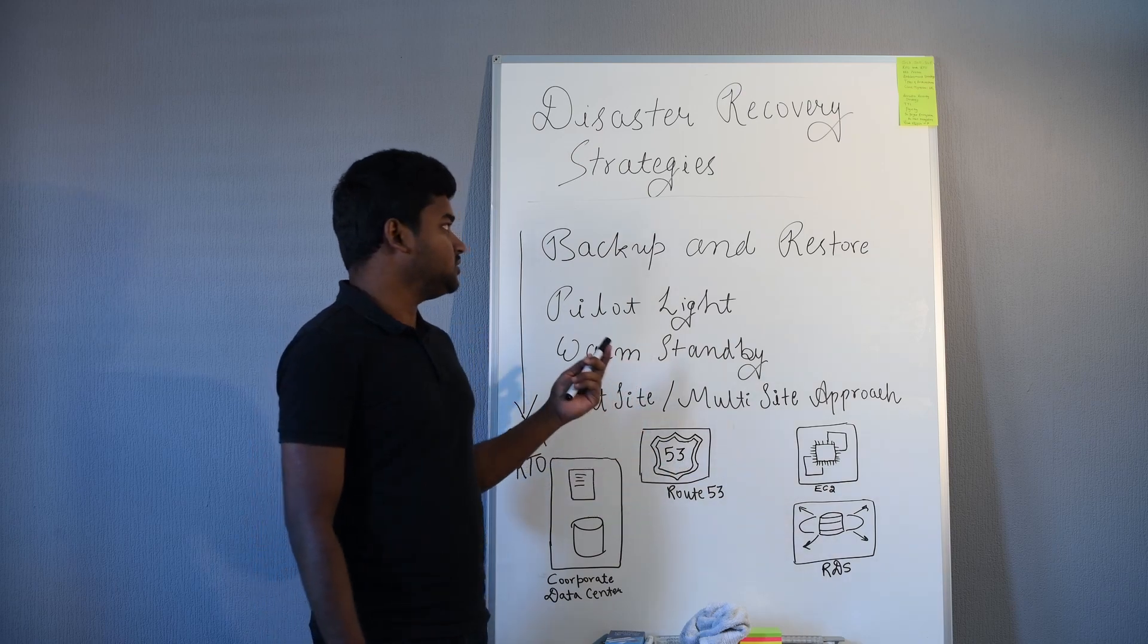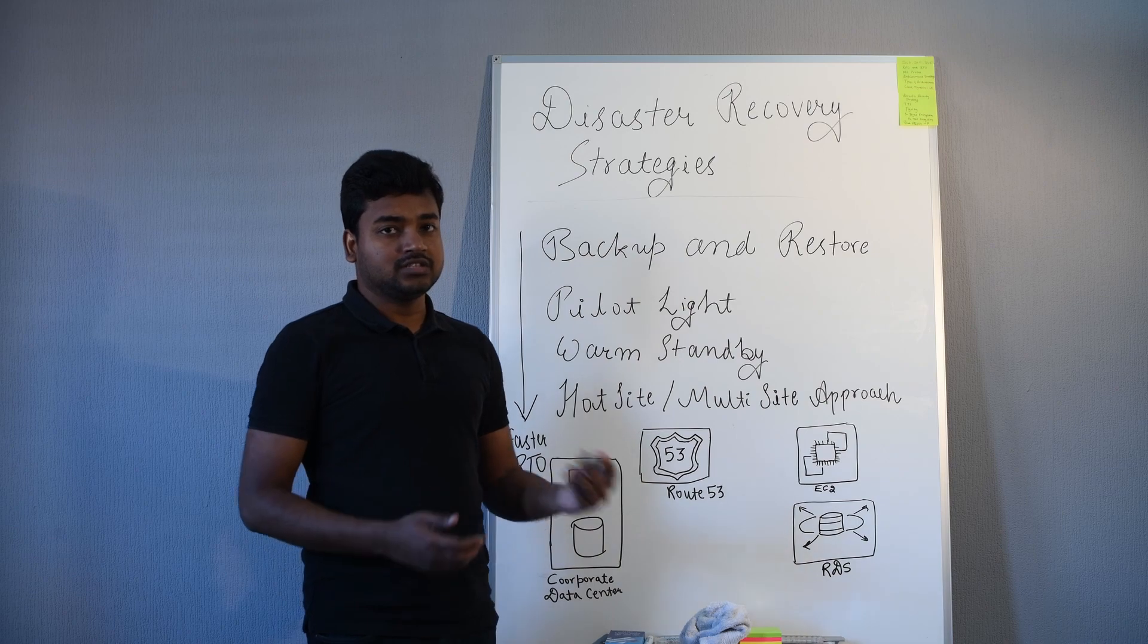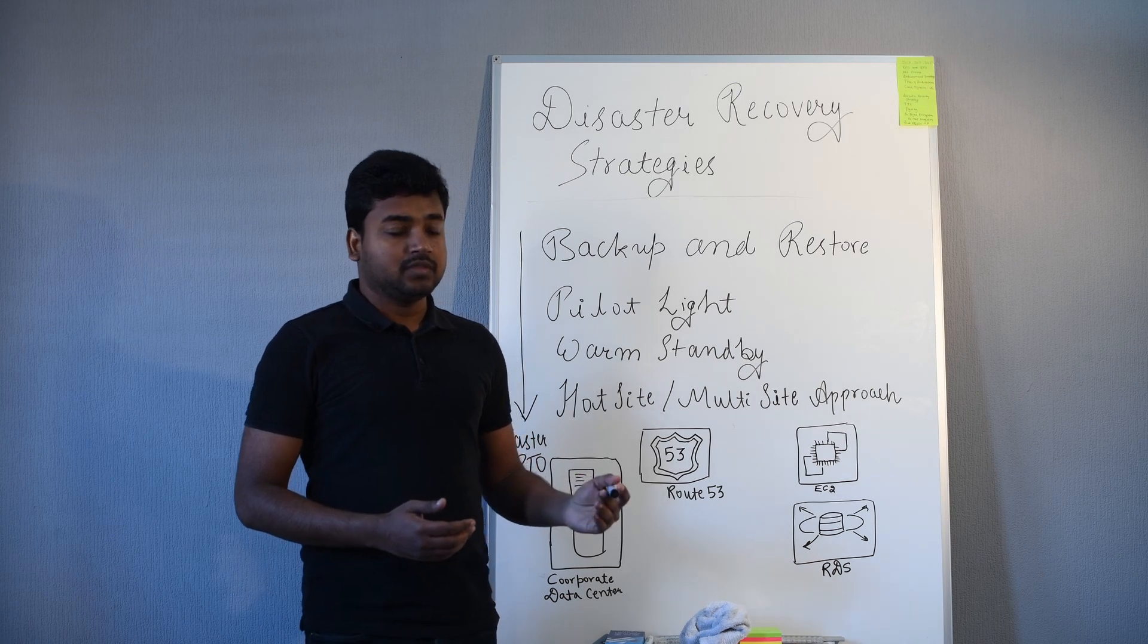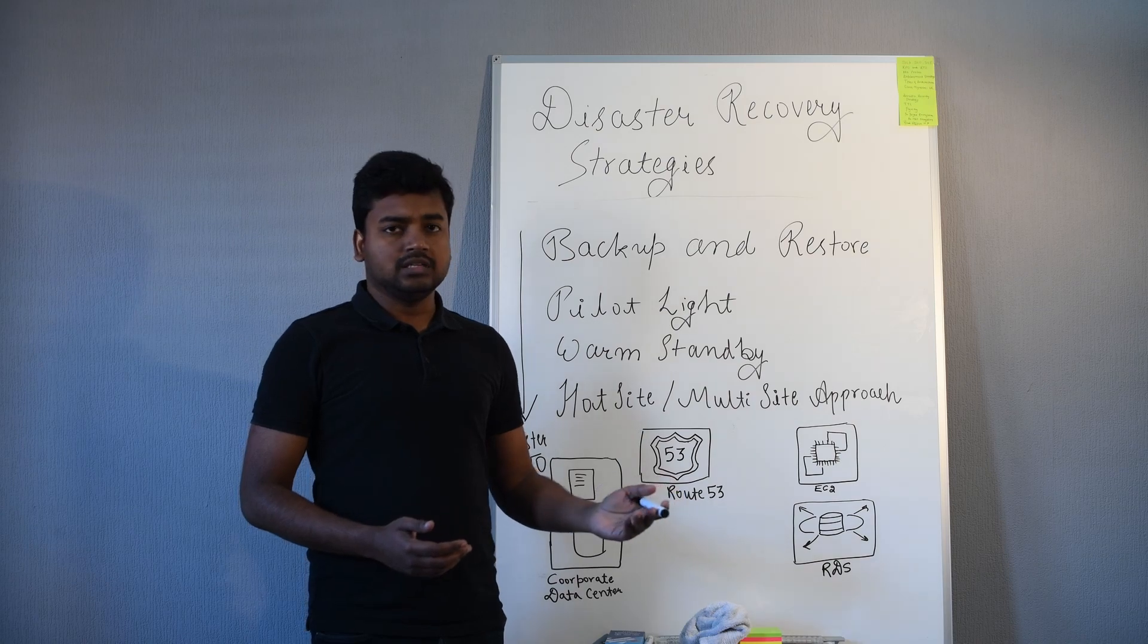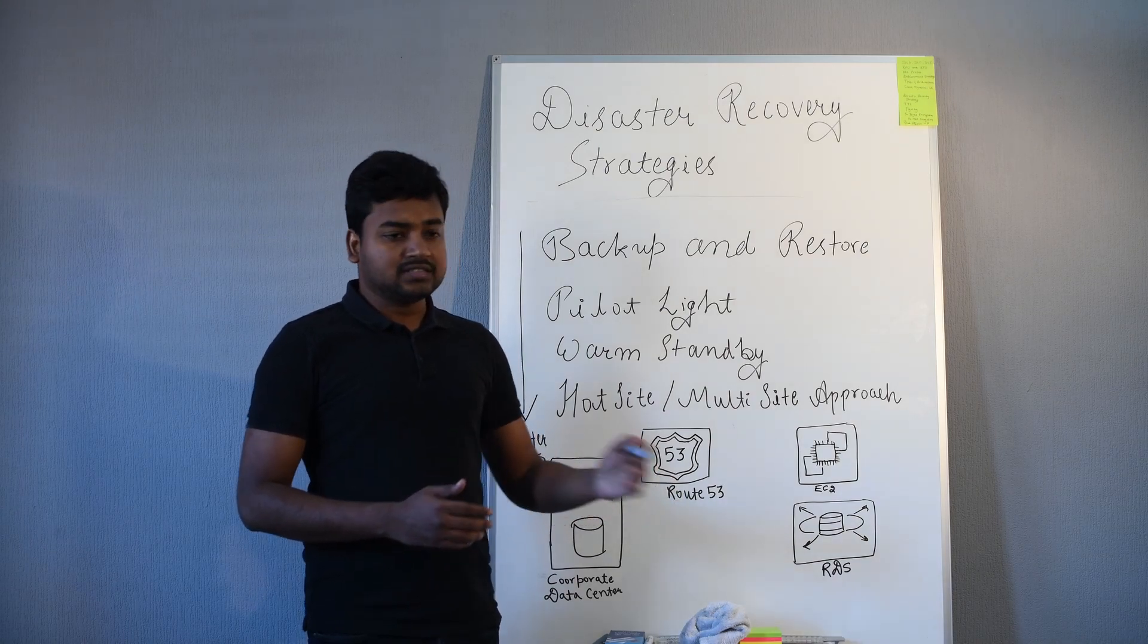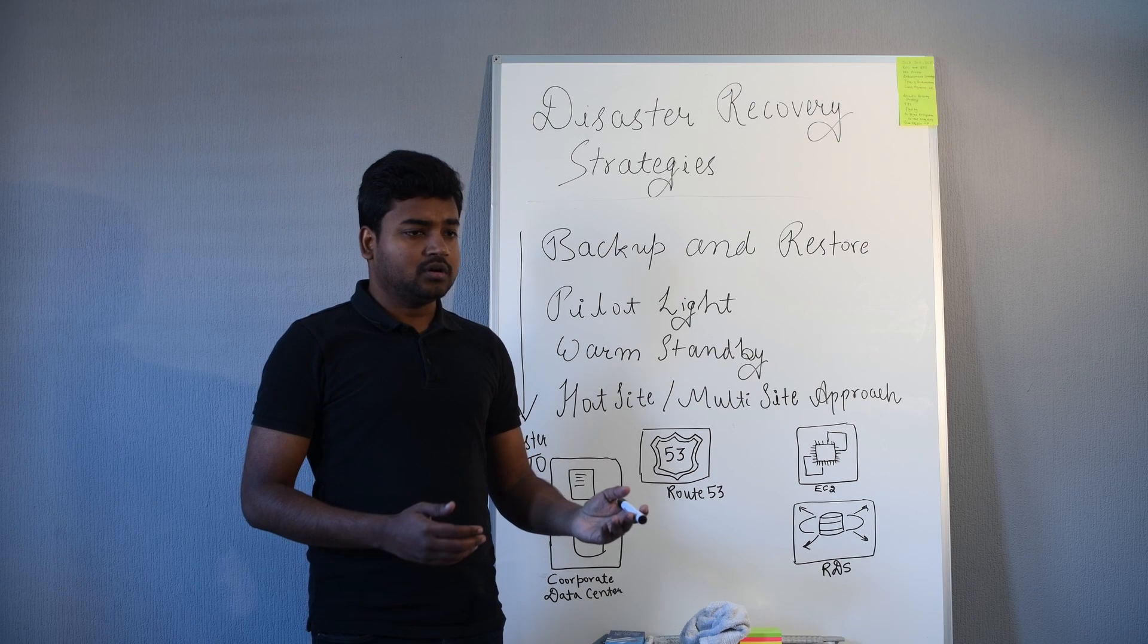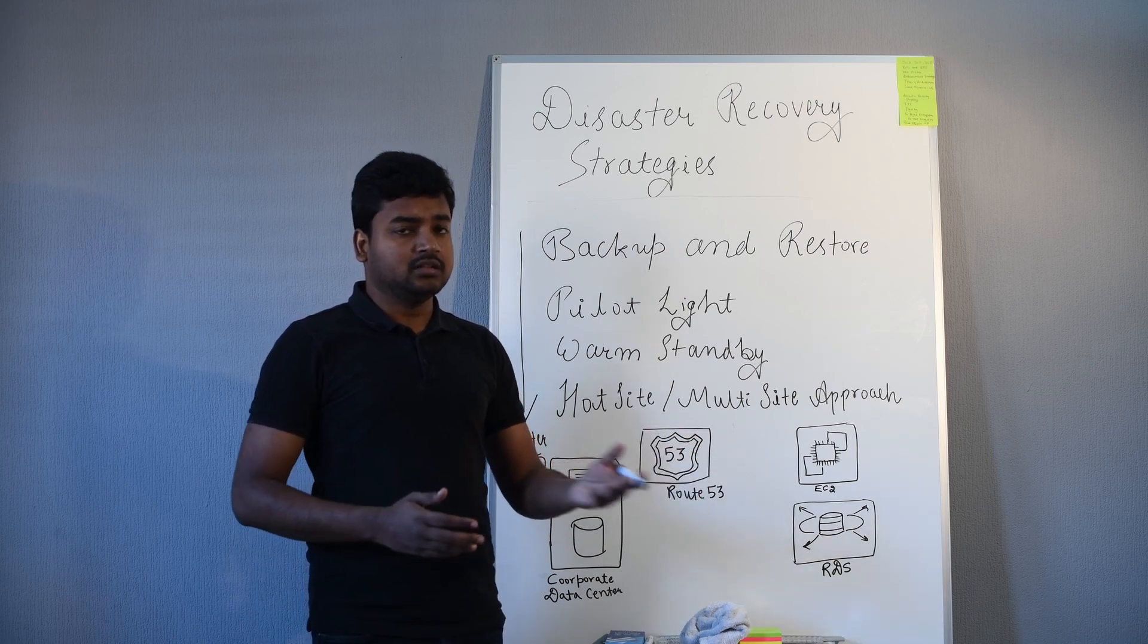We'll see the first one, which is backup and restore. In backup and restore, an organization takes backup of their data in the cloud or on-premise, like in S3, or they take snapshots of their EBS volumes, Redshift, or any kind of database. They also take AMIs of their machines if they have EC2.